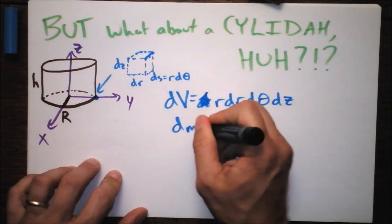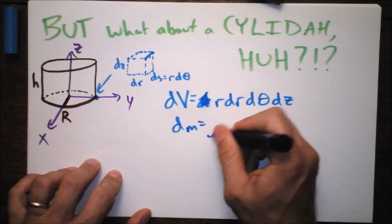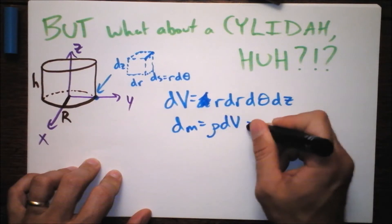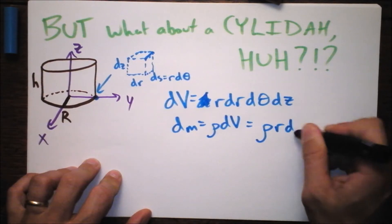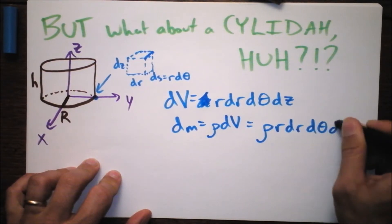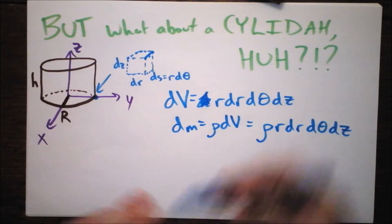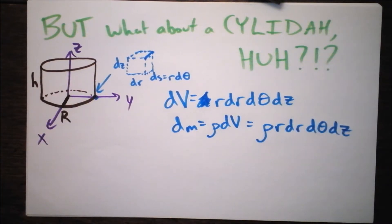DM then. DM is the thing we've been talking about all of the time. It's just rho times DV, which is rho times R, DR, D theta, DZ. Whee! You have to say that when you're finished, because otherwise you might start to feel despair.